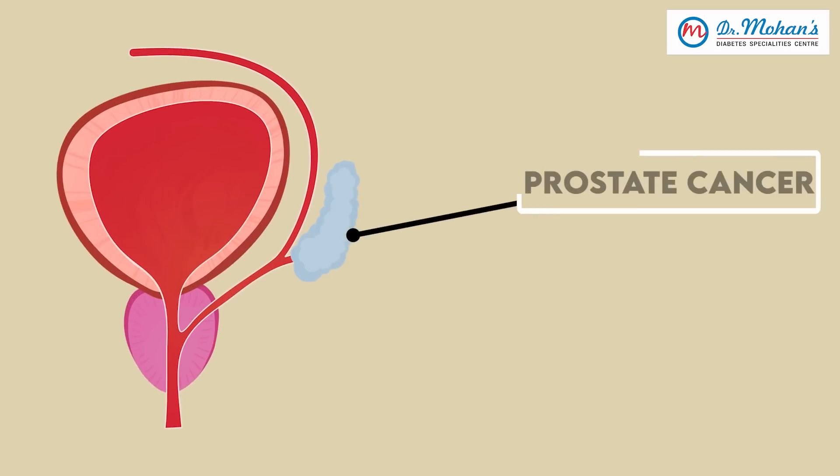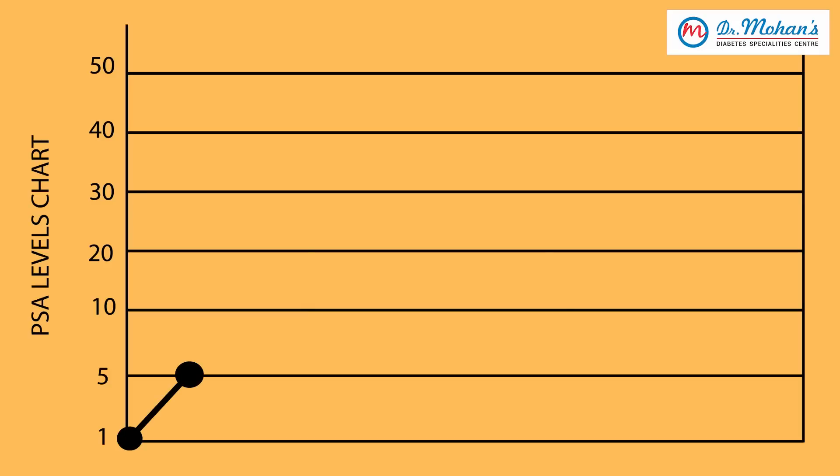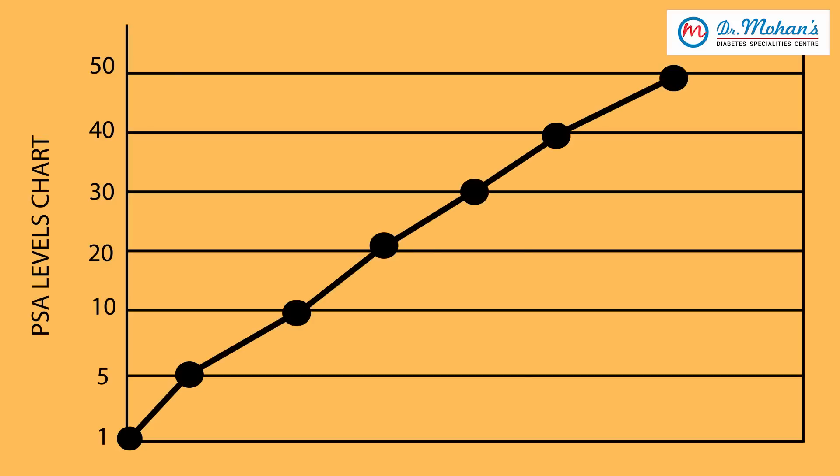We are not worried about the normal enlargement of the prostate, which we call BPH — benign prostatic hypertrophy. That is common in all men after a certain age. What we are worried about is: number one, the prostate can get infected — that is called prostatitis — which also leads to urinary infection. More importantly, in a few people the prostate can turn malignant, giving us prostate cancer. One of the tests we regularly do is a simple blood test called prostate specific antigen or PSA. The normal PSA is 1 or 2; if it is above 4 or 5 it could be abnormal, and if it goes very high — 10, 20, 30, 40 — you may be having prostate cancer.